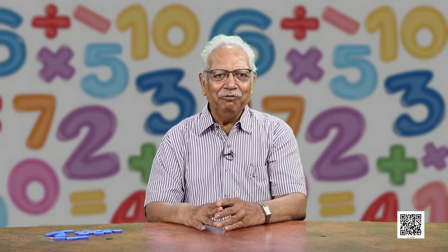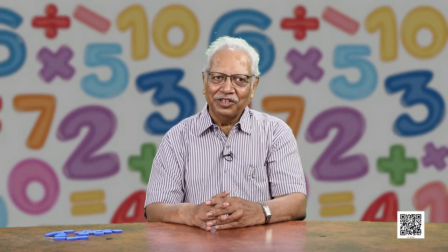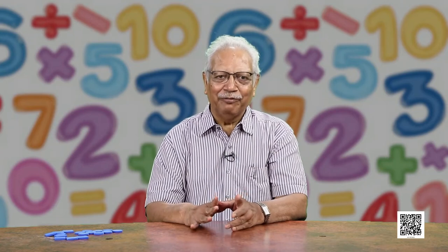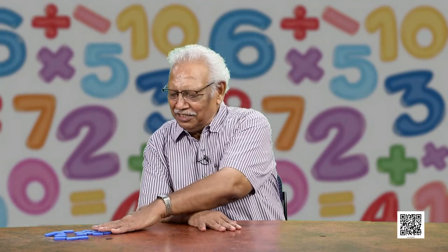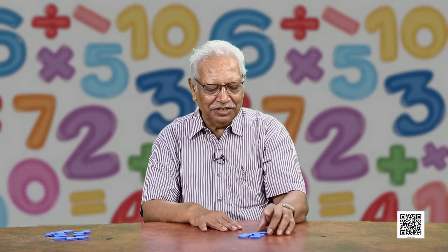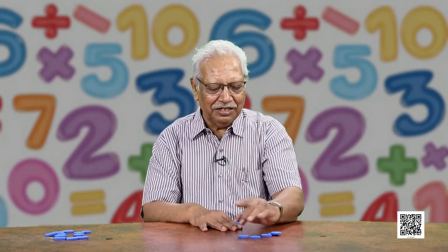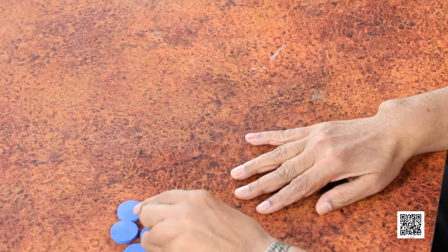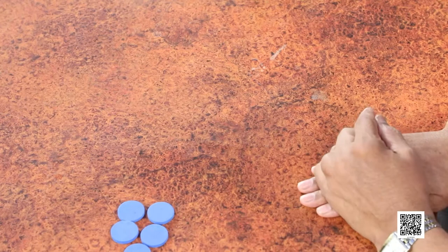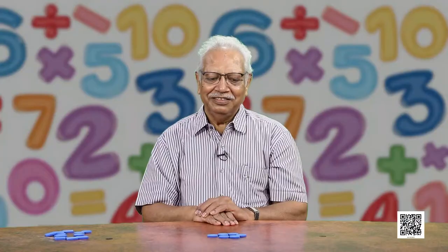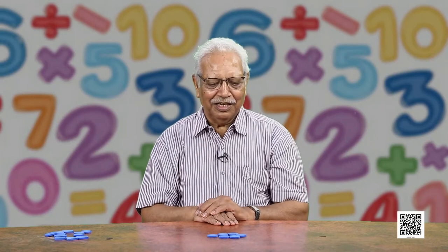Welcome back. And now we are going to take numbers more than 5 and see what happens when we add 1 more to it. Let us take these round things. These are how many? You can count: 1, 2, 3, 4, 5. And if we add 1 more, how many do these become? 6. They are 6.